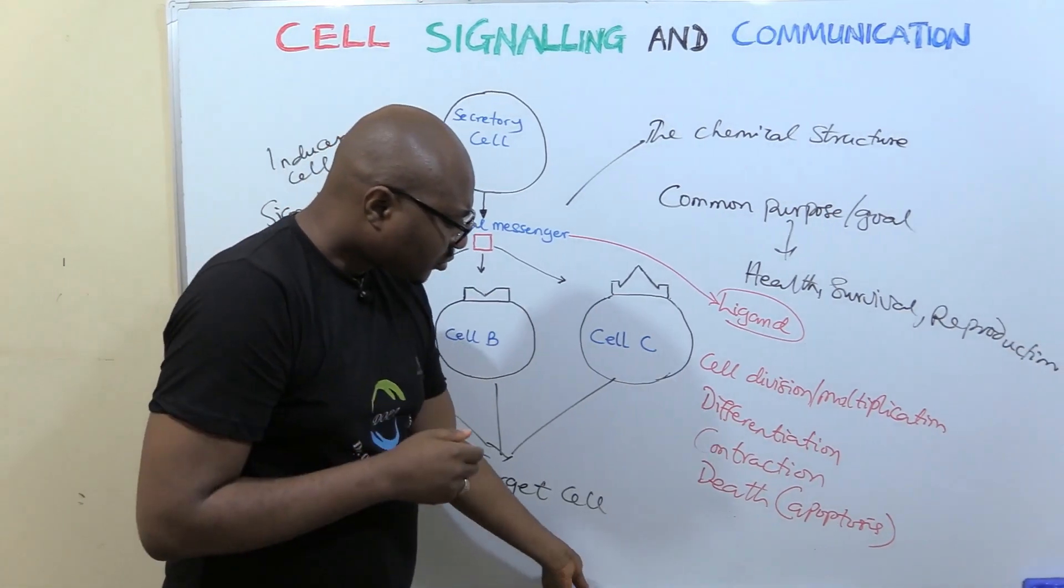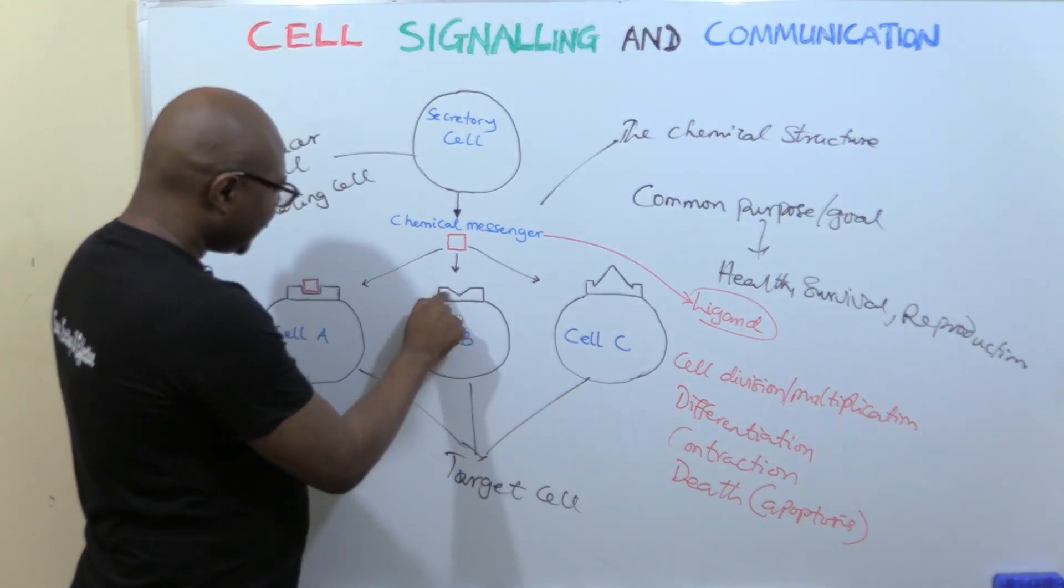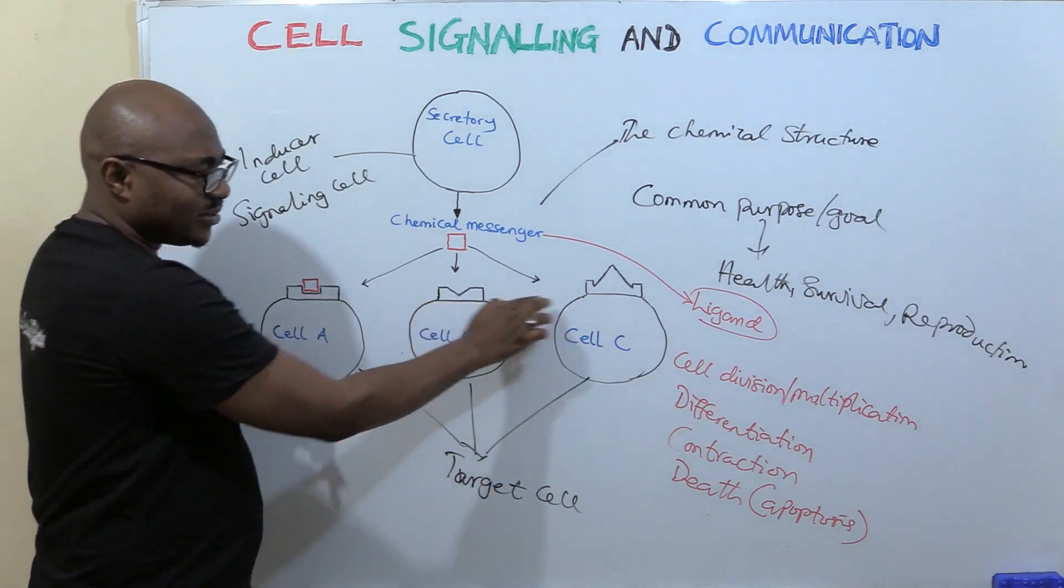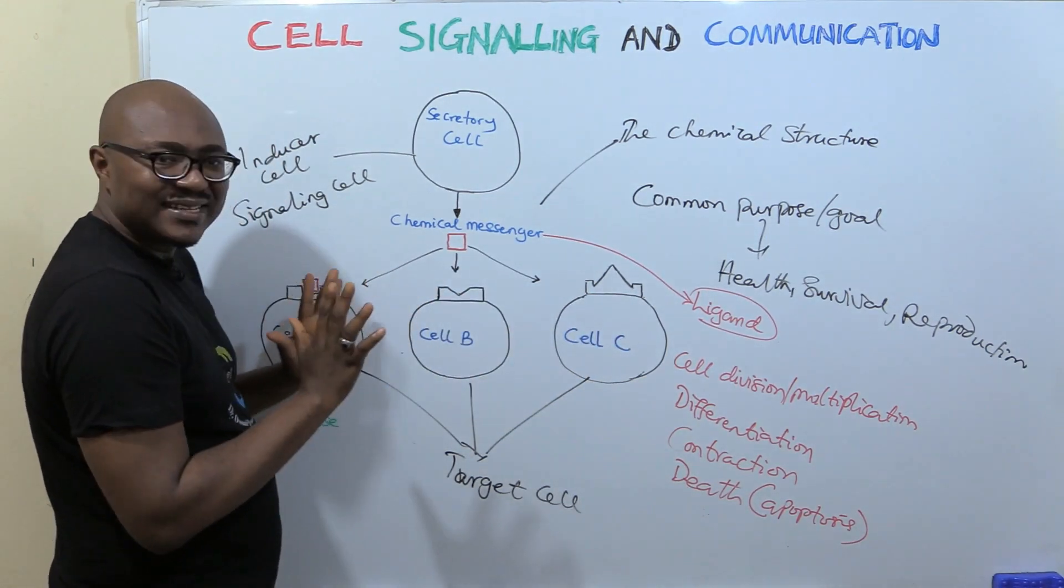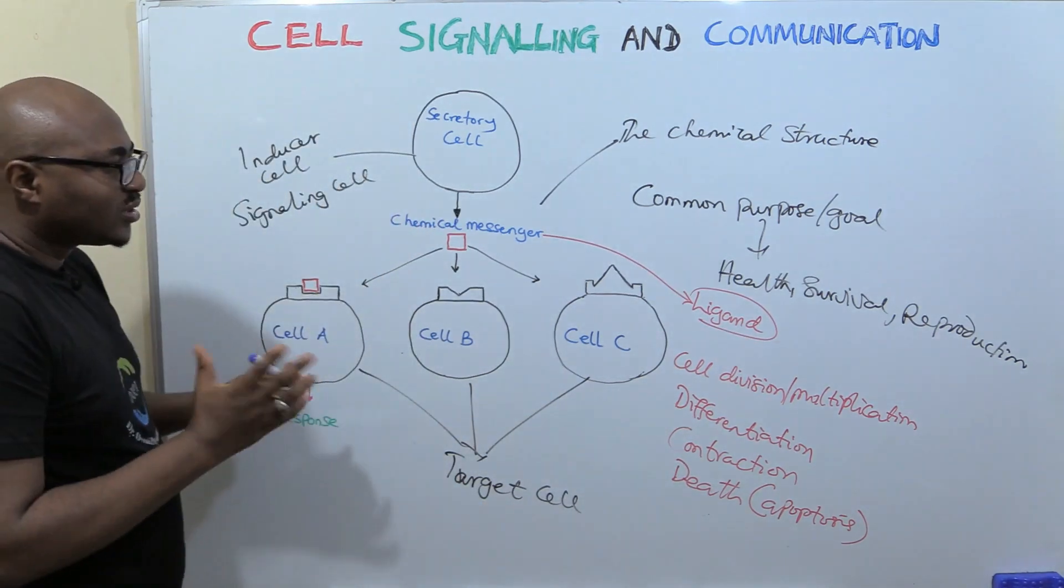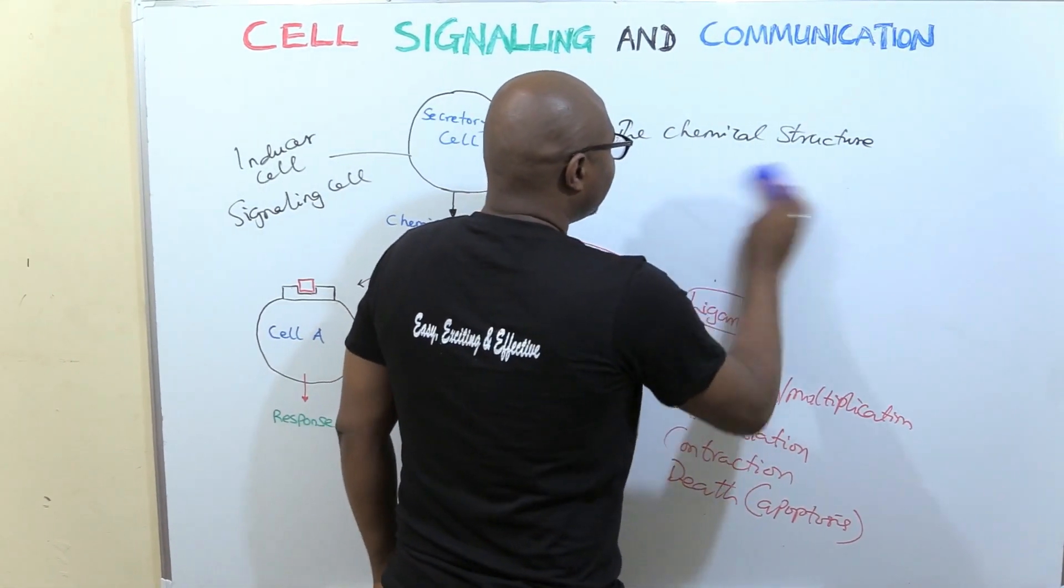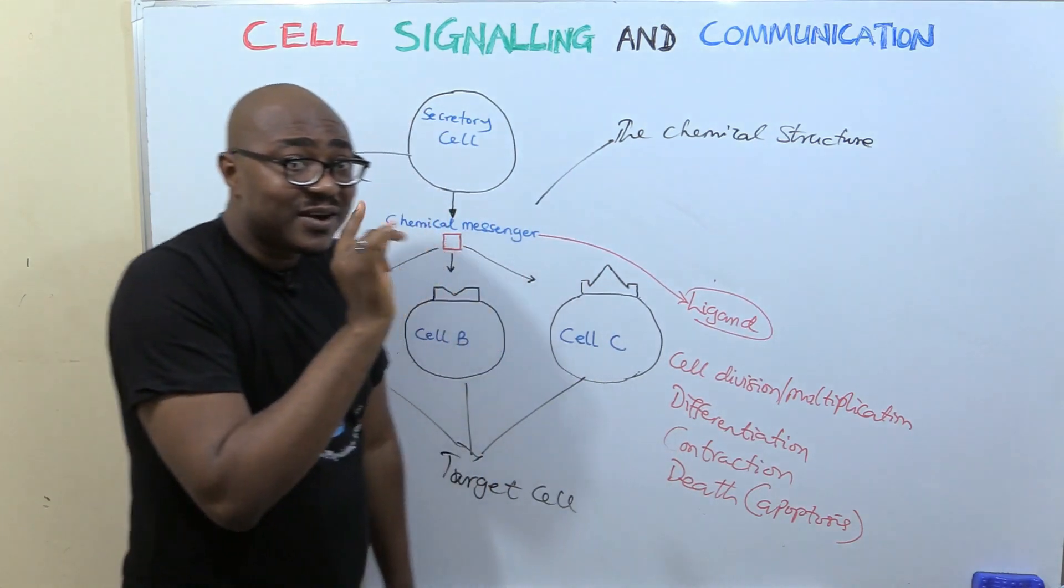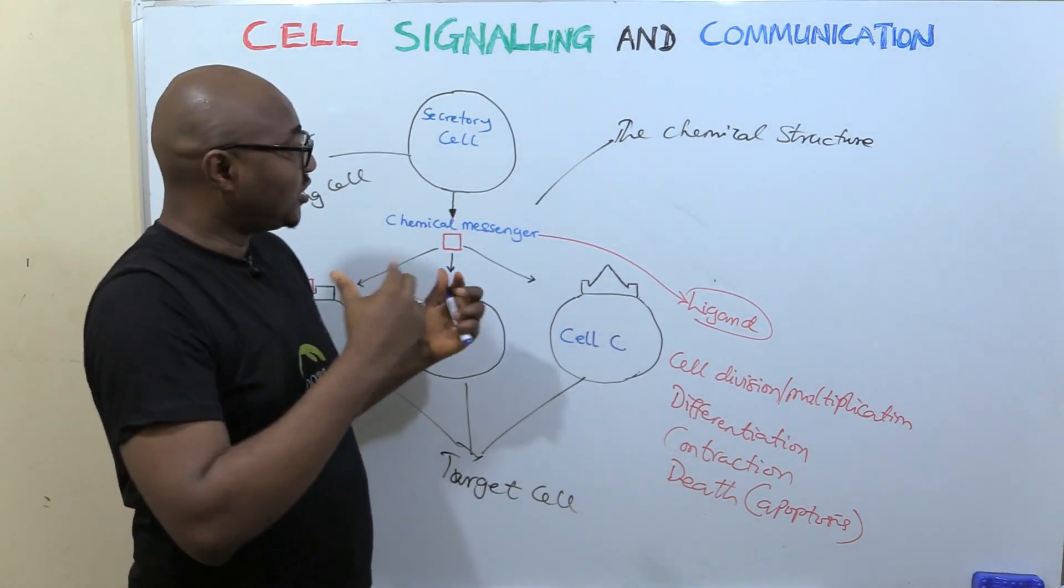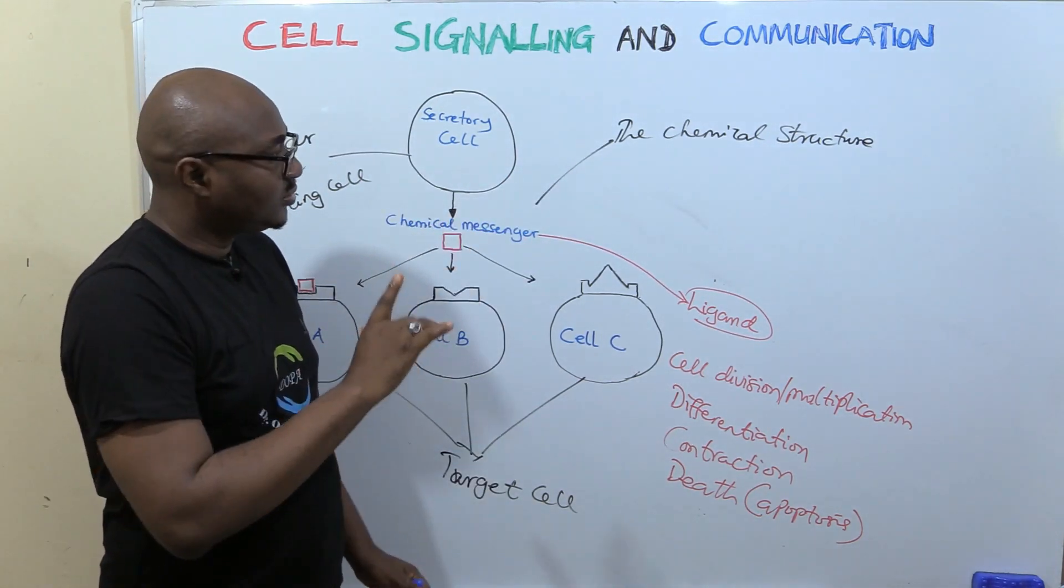But now, we're going to talk about types of receptors. Because in this diagram, it's looking as if the receptor has to be at this surface alone. You know, this is just a simplistic diagram where you don't understand. Now, we're going to talk about types of receptors. What are the types of receptors? Broadly, there are two types of receptors. I need to really, it's very important for you to understand. Because when you are dealing with endocrine physiology, later on, this knowledge is going to help you a lot.